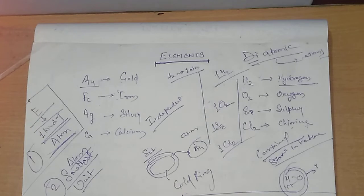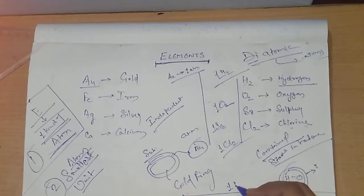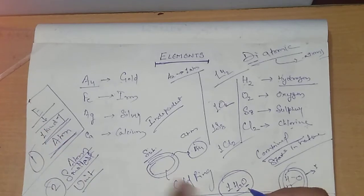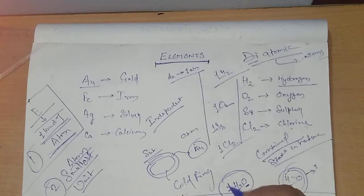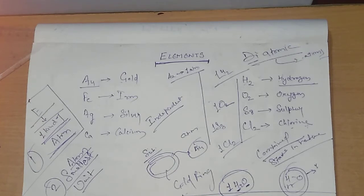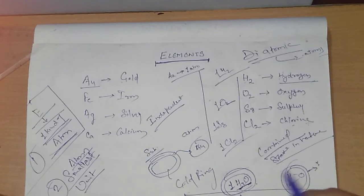We discussed one example yesterday: H2O. H2O is one molecule but would not be considered an element, because one molecule of water has two different kinds of atoms in it — hydrogen atoms as well as oxygen atoms. One molecule of water has three atoms total, but they are not of the same kind, so water would not be considered an element.